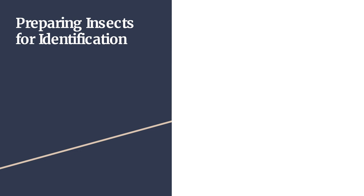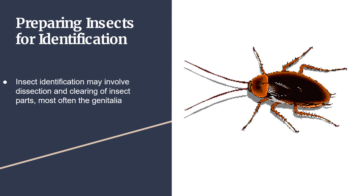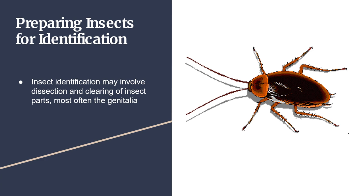Preparing Insects for Identification. Insect identification may involve dissection and clearing of insect parts, most often the genitalia.